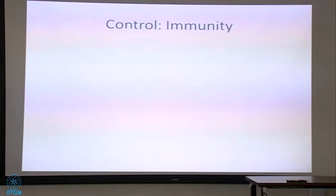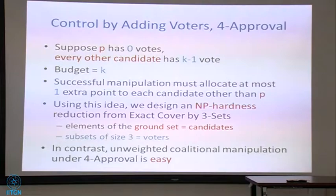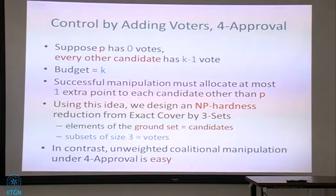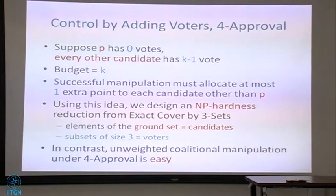Let me continue talking about control. Every voting rule is vulnerable to coalitional manipulation — if you have enough manipulators they can change the outcome, and every voting rule is vulnerable to manipulation. Control is different: at least for some types of control, there are voting rules that are completely resistant. So you may try a control action, but for a given voting rule it has no chance of succeeding. We call this immunity. A voting rule is immune to a control action if that action cannot change the election outcome at all.